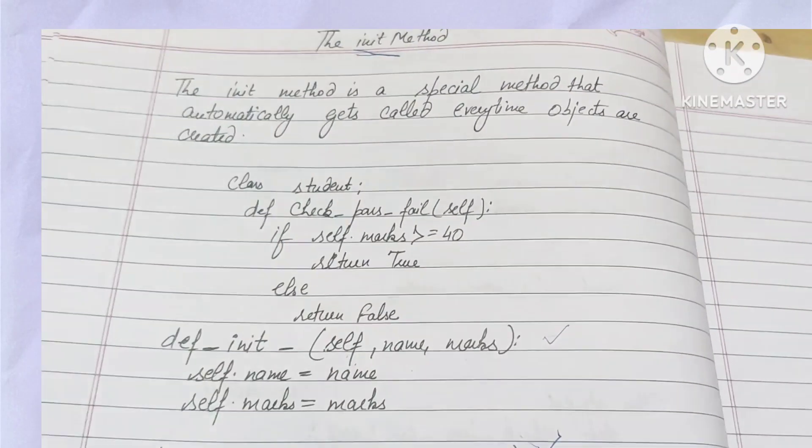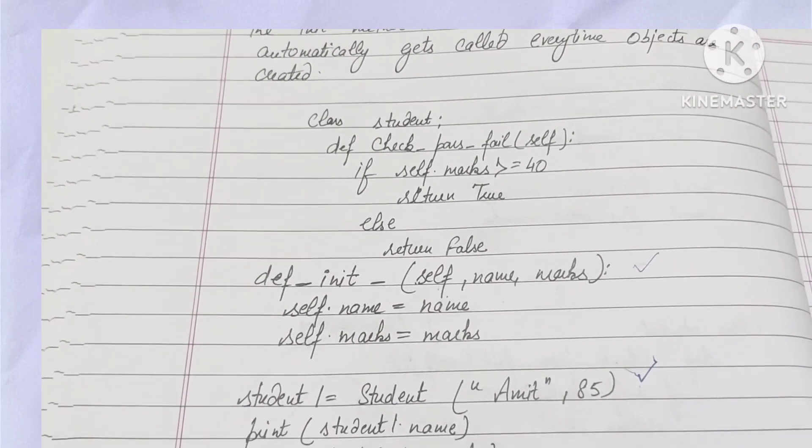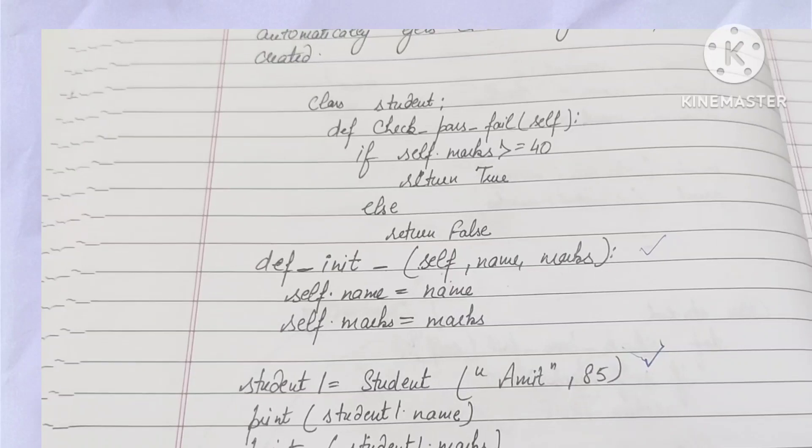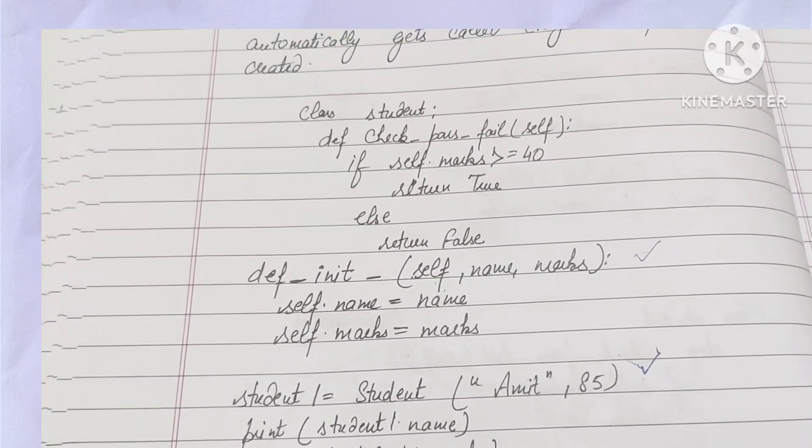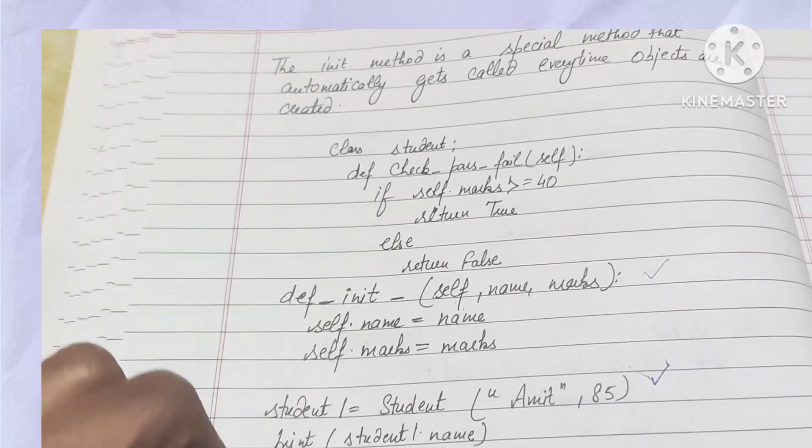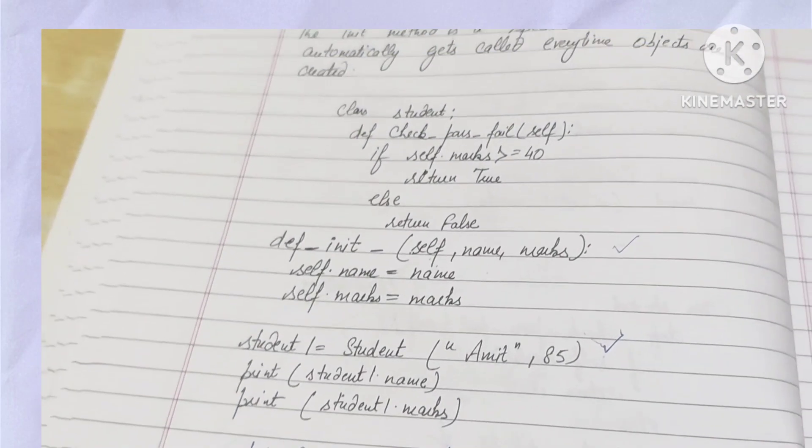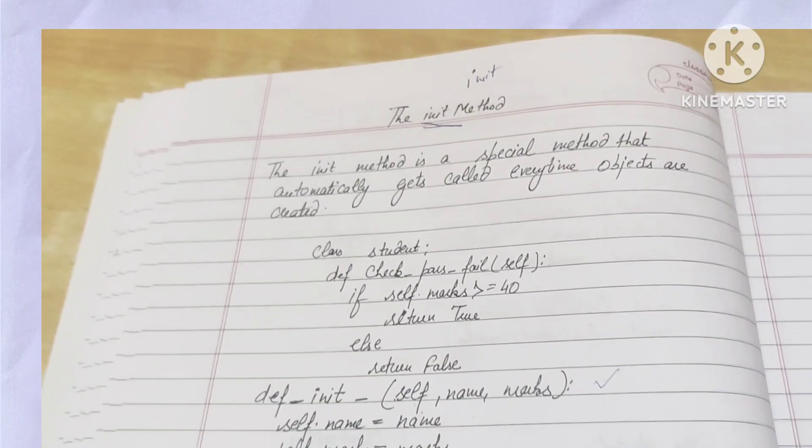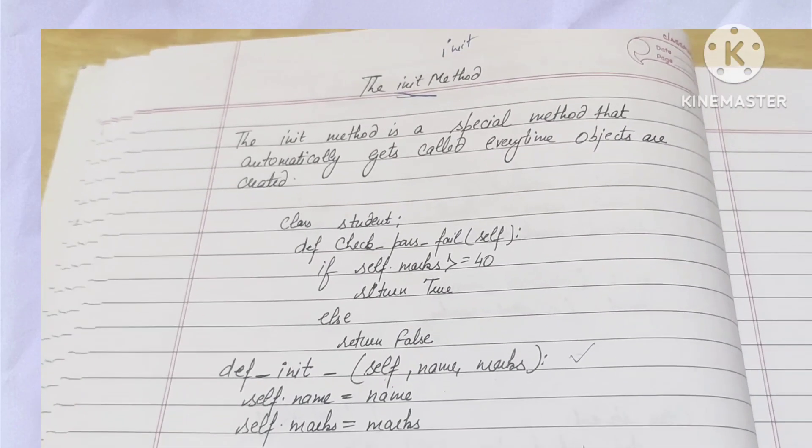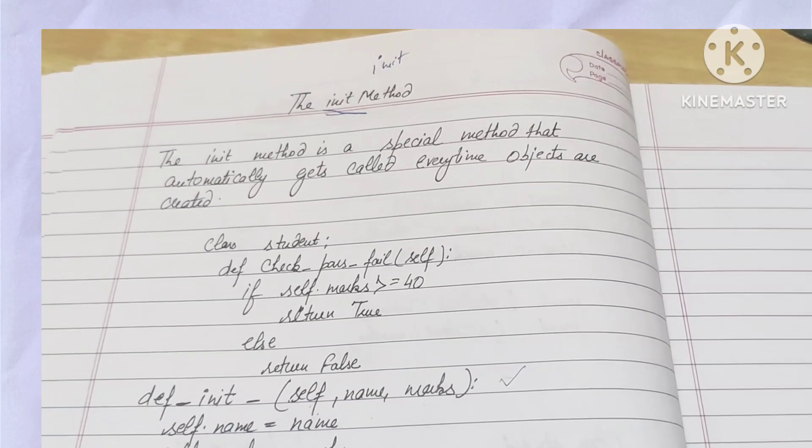When you see the previous program, the previous tutorial, you will declare it inside the program. This is outside the program. It is also happening outside, it is happening inside. Inside is not happening outside. But because it was automatically calling, we have taken it through. This is the shortest video of the init method.